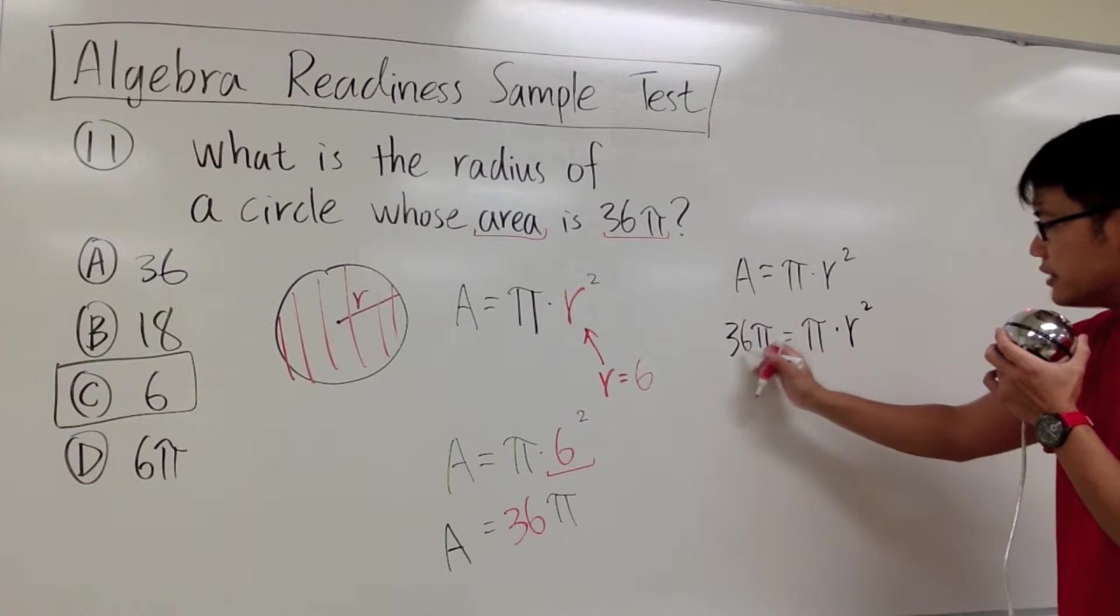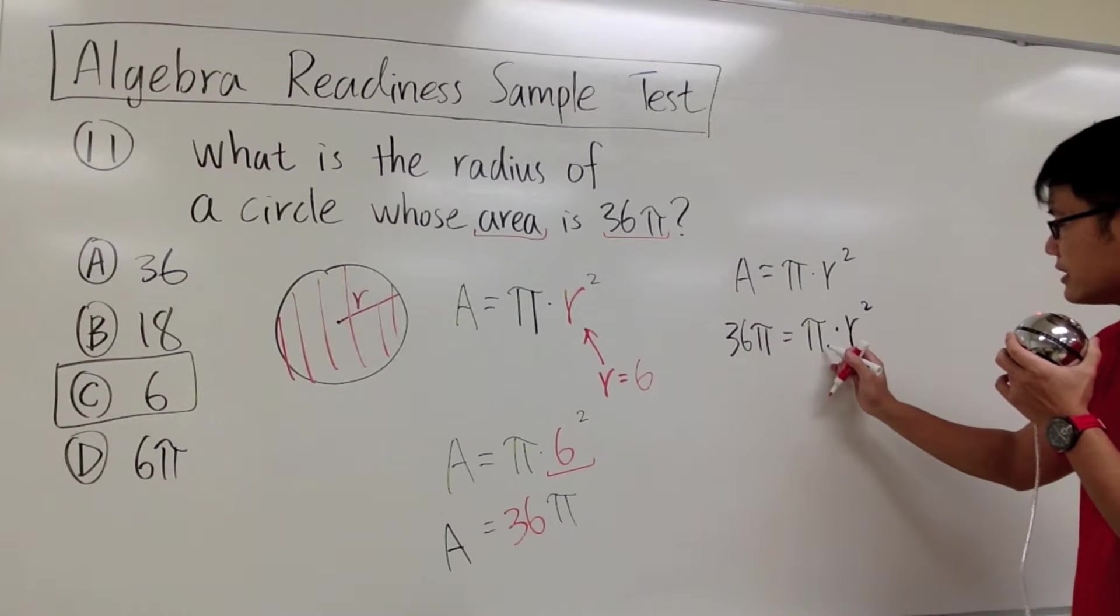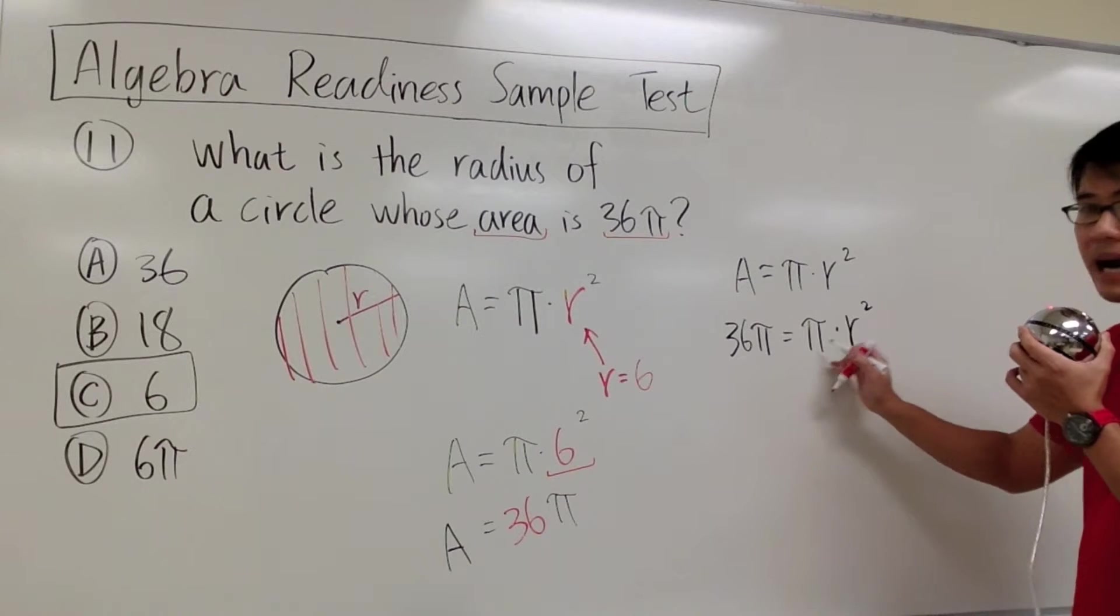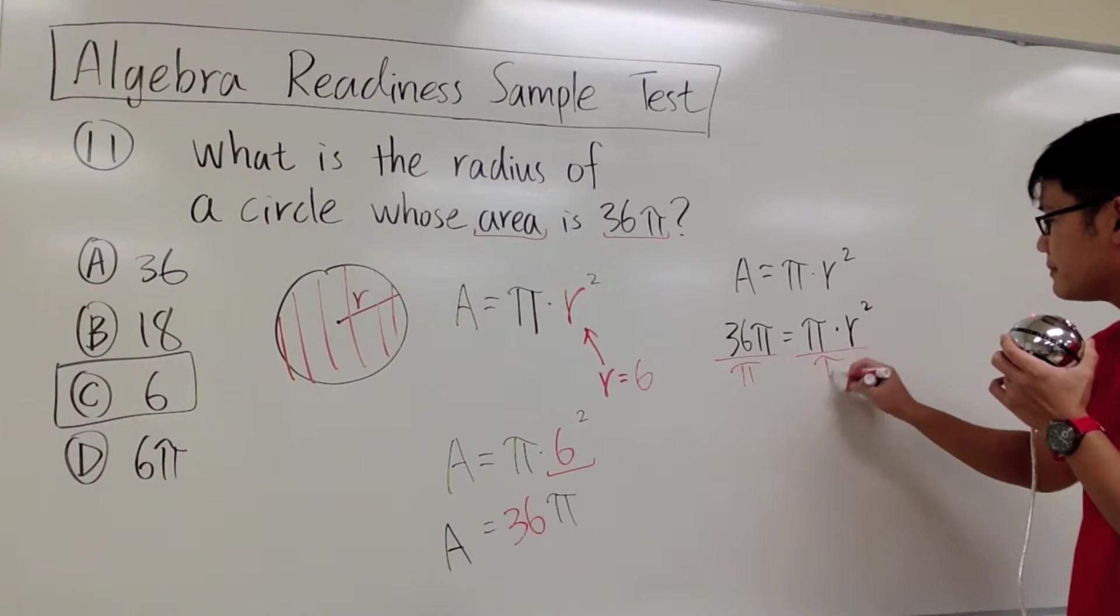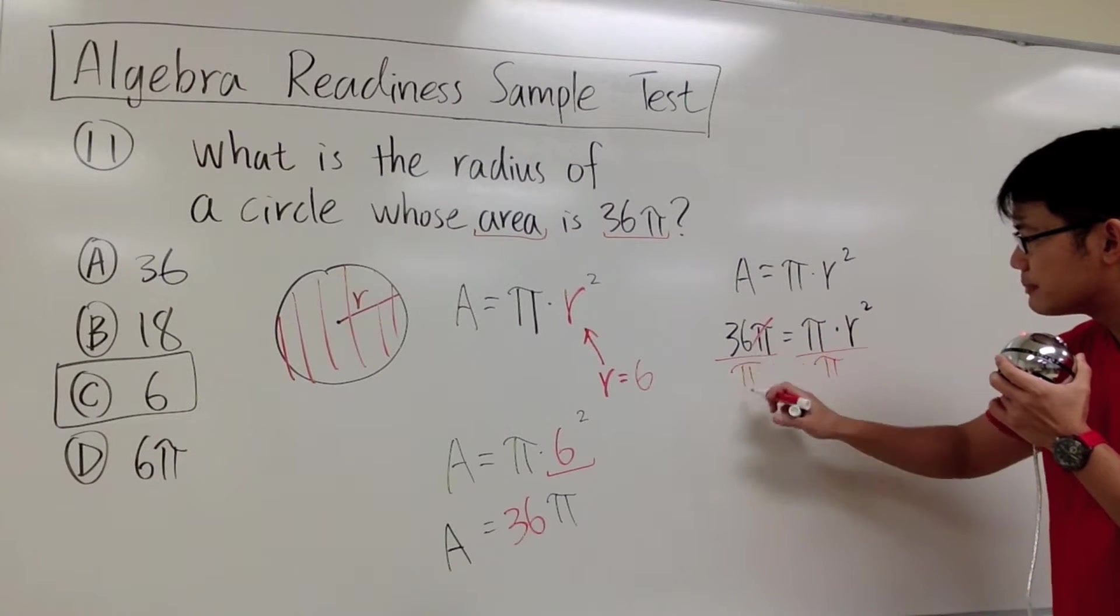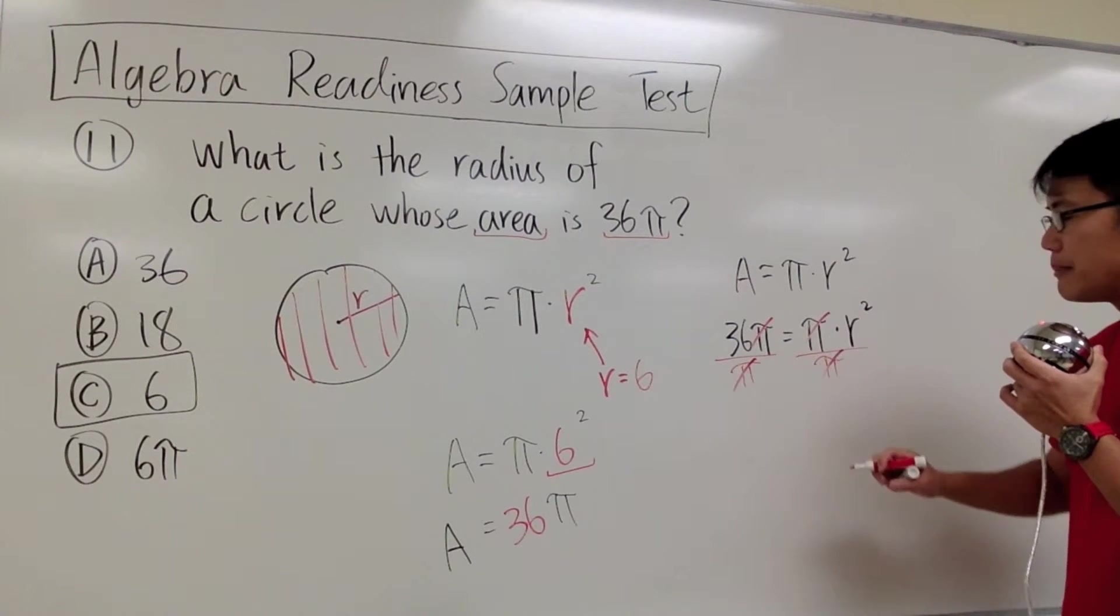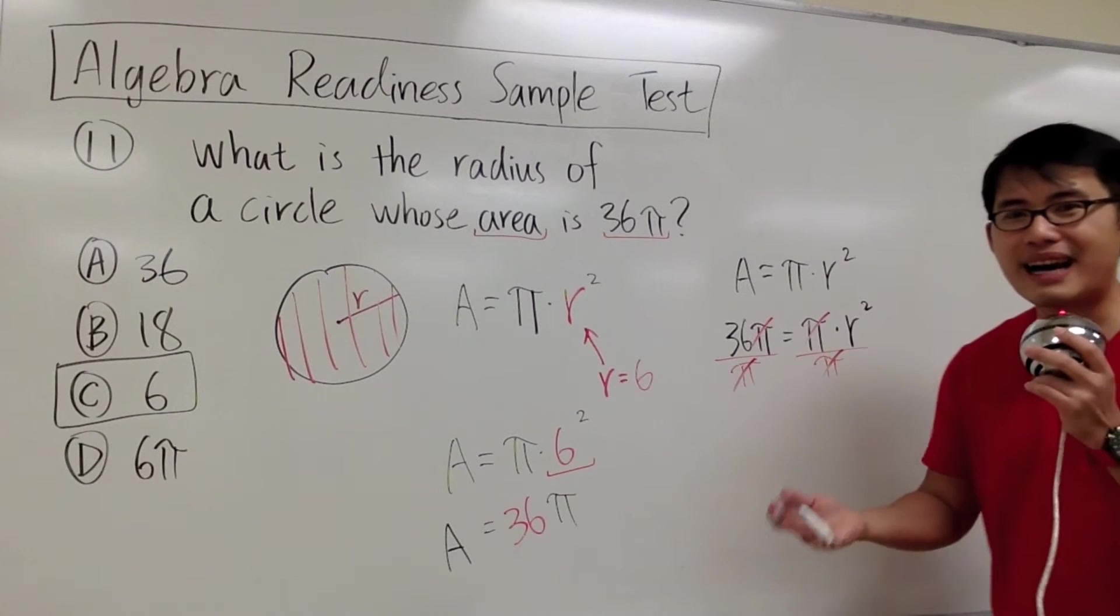And then we see that this is 36 times π. And on the right hand side of the equal sign, we have π times r². What we do is we first divide both sides by π. And then we can cancel this π and that π. In another word, the π doesn't really matter.